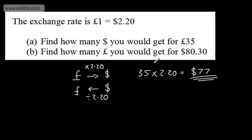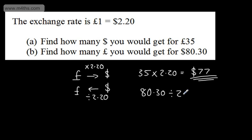We now want to find how many pounds we would get for $80.30. So we're going back the other way. What we can say this time is $80.30 divided by the exchange rate, which is 2.20, will give us the amount that we want in pounds.